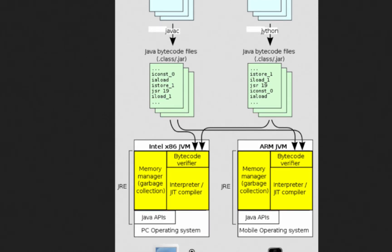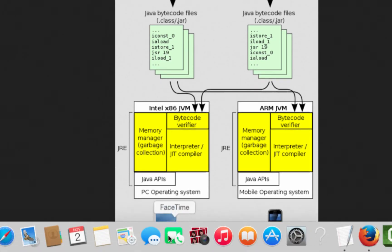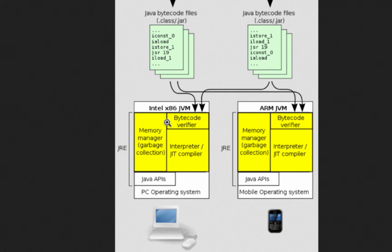To handle this, Java has something called a JVM. The JVM is very intelligent — it converts the compiled class file into a format which is understandable by that particular operating system. There is a Windows JVM which converts the bytecode into a format understandable by Windows, and a different JVM which converts the same class file into a format understandable by another operating system. If there are ten operating systems, there are ten different JVMs.